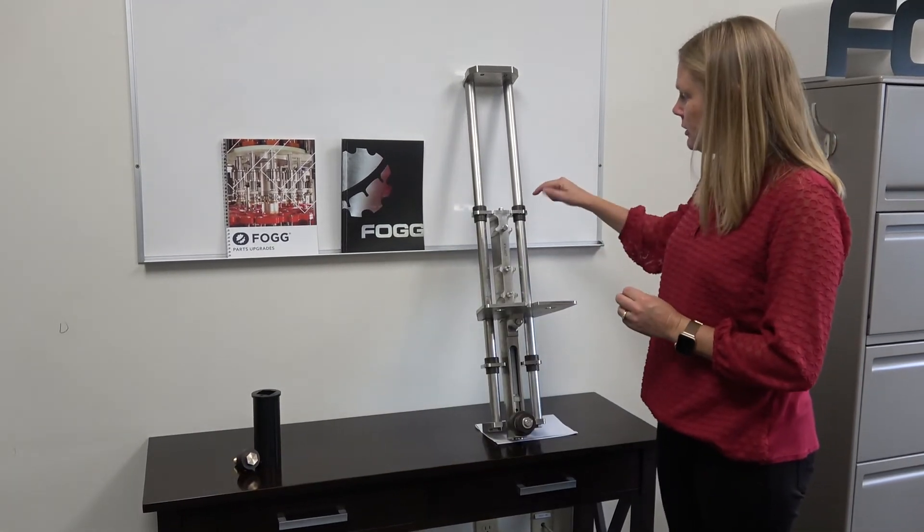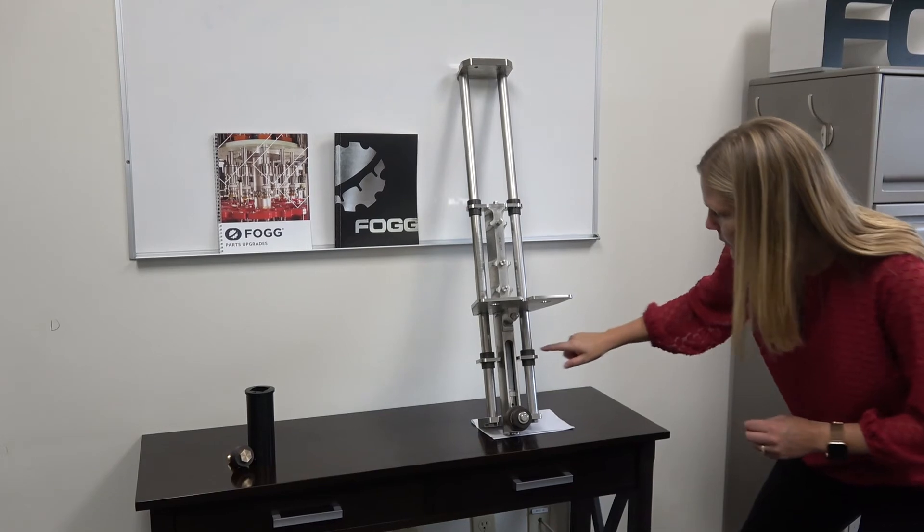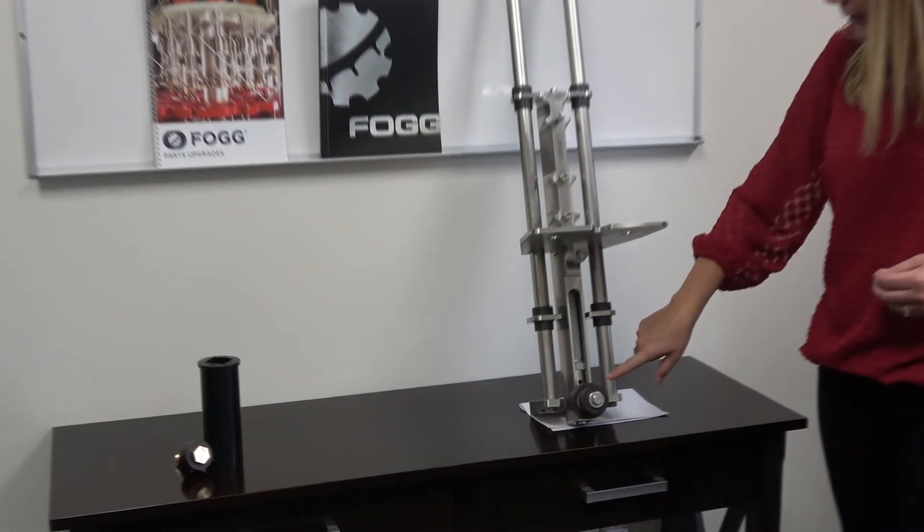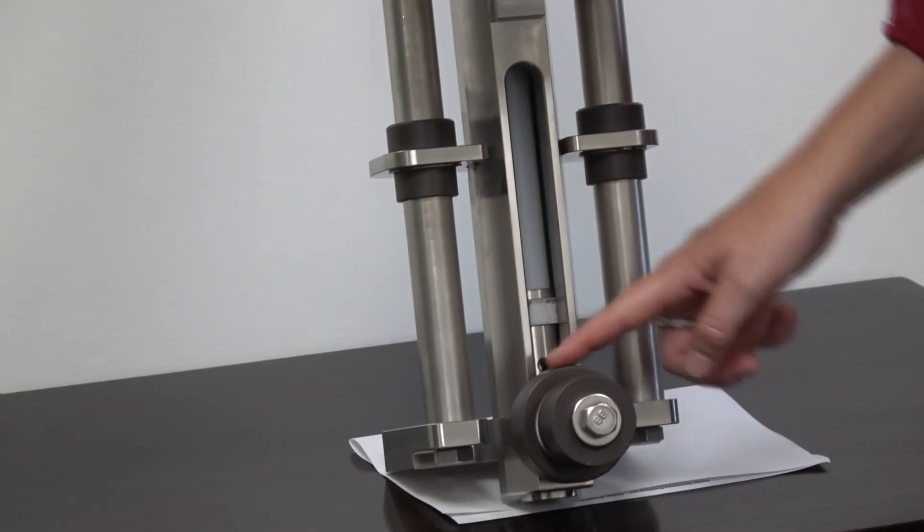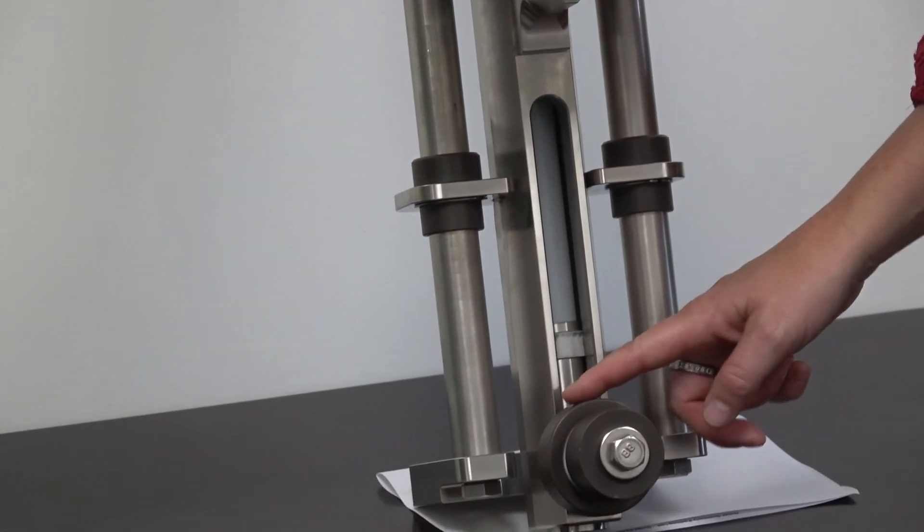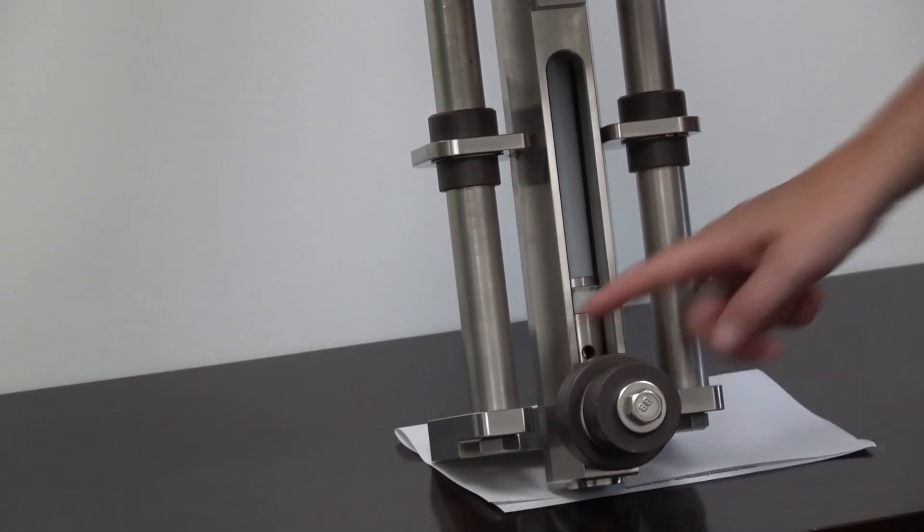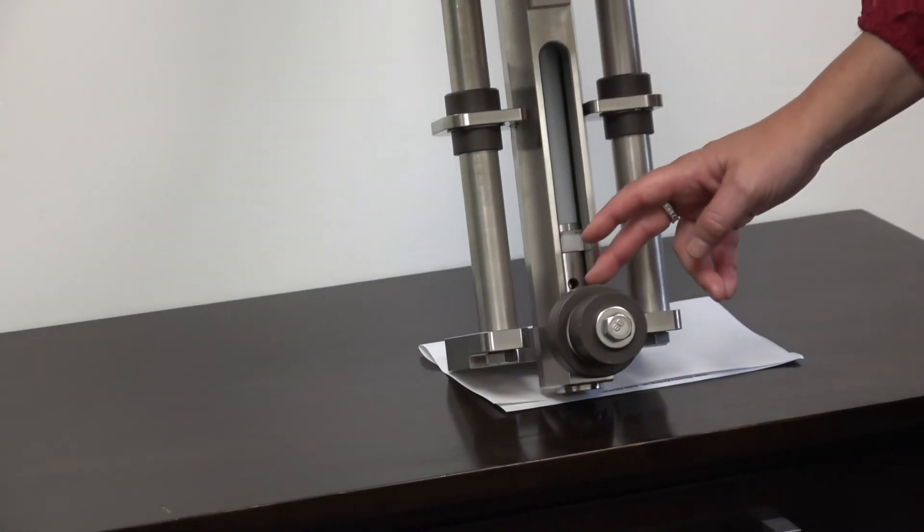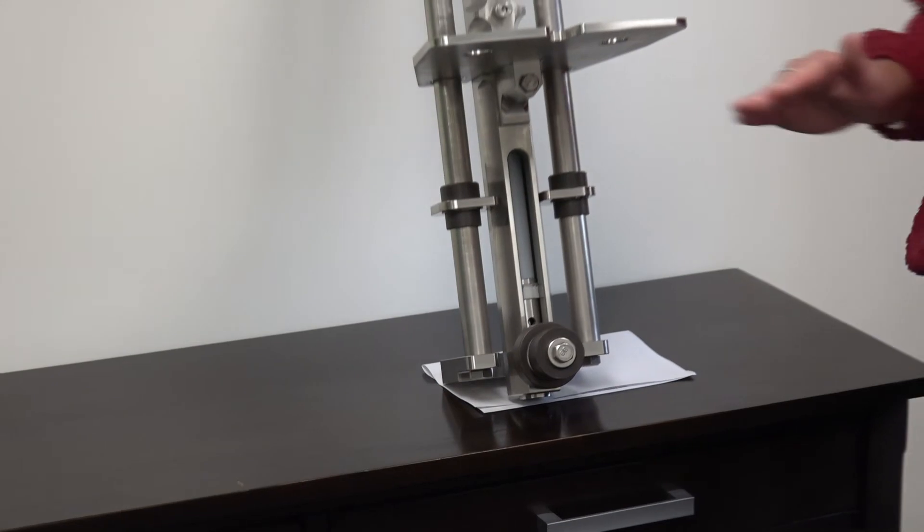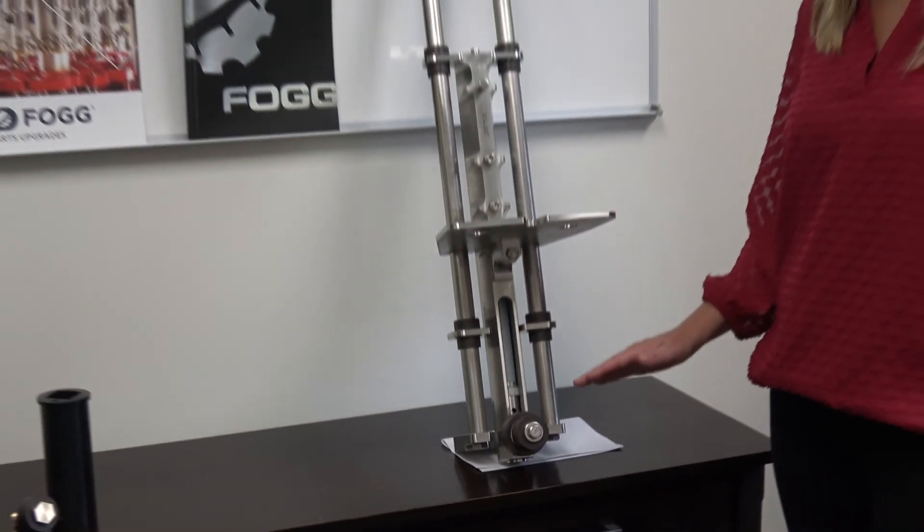So here are your lifter bushings here. One, two, three, four. And then also down here is a ceramic bearing and then this plastic roller. Those two are similar to what we talked about over here. They too will see the wear as they're driving up and down those cams every time it fills a bottle.